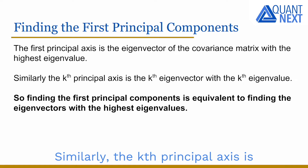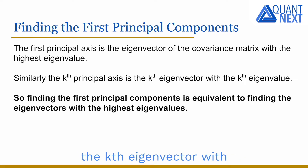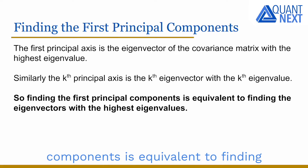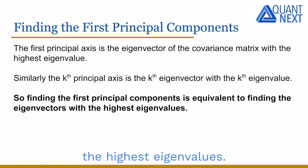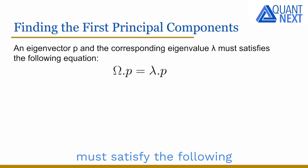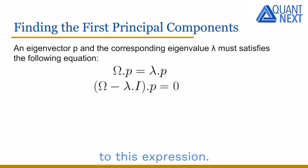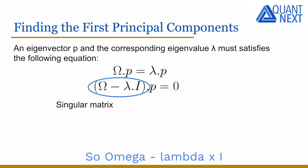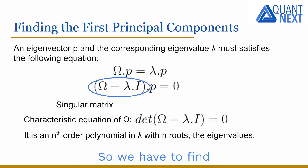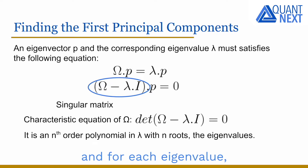Similarly, the kth principal axis is the kth eigenvector with the kth eigenvalue. So finding the first principal components is equivalent to finding the eigenvectors with the highest eigenvalues. An eigenvector P and the corresponding eigenvalue lambda must satisfy the following equation, which means omega minus lambda times the identity matrix I is a singular matrix — its determinant is equal to zero. So we find the roots of the characteristic polynomial to get the eigenvalues, and for each eigenvalue there will be an eigenvector which satisfies the equation.